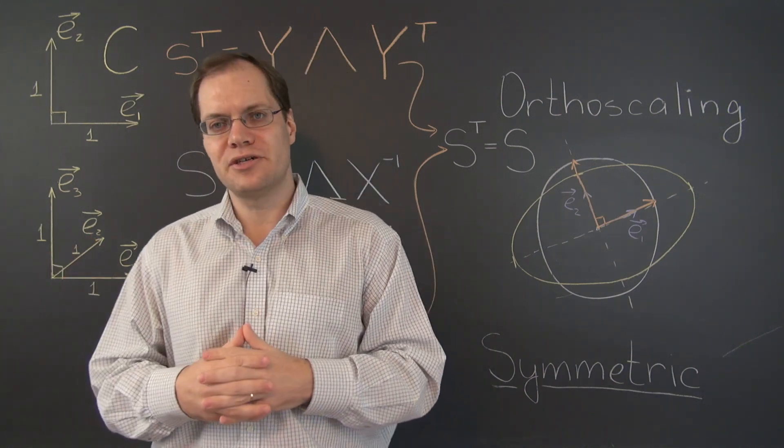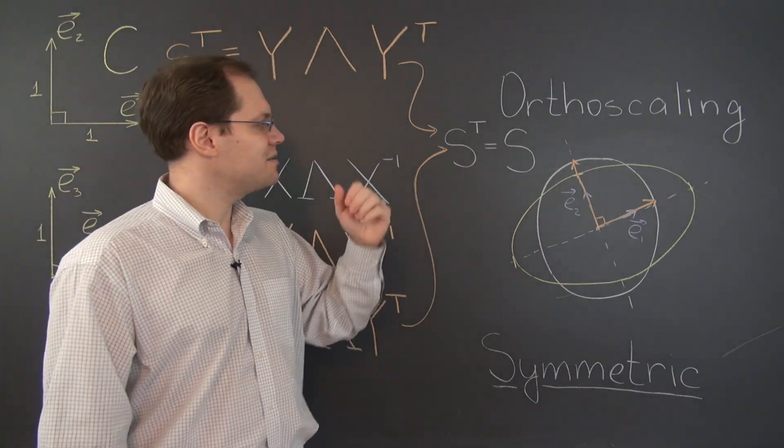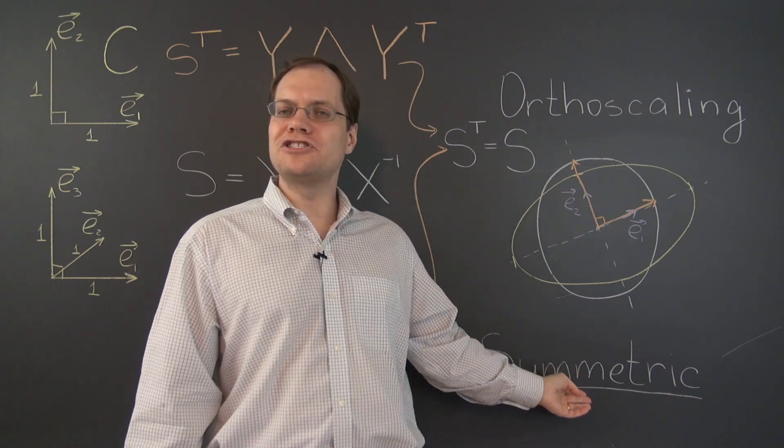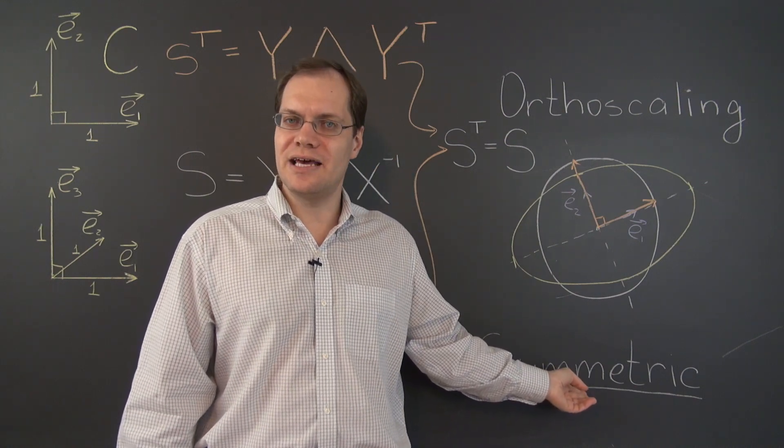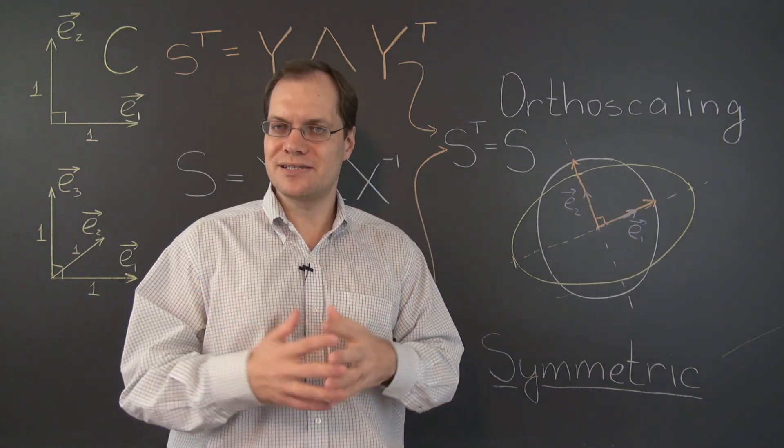So we have just demonstrated rather easily that any orthoscaling transformation with respect to a Cartesian matrix is represented by a Cartesian basis, is represented by a matrix that is indeed symmetric. Thus partially justifying this name for this category of transformations. This completes the demonstration.